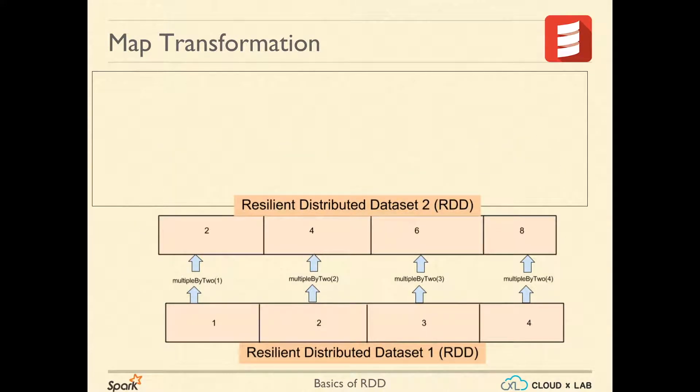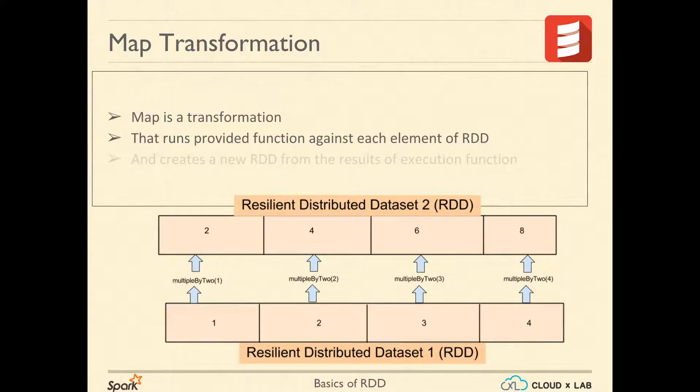Let's take a look at an example of transformation called map. A map is a transformation that runs provided function against each element of RDD and creates a new RDD from the results of the execution of the provided function.